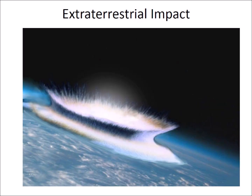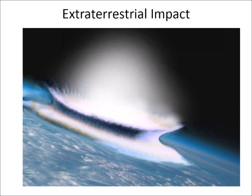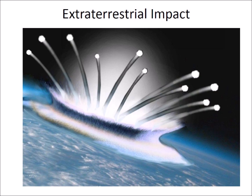The impact on the Laurentide Ice Sheet fractured the ice and the excavation of the crater ejected millions of huge ice boulders. The heat from the impact created a plume of steam that propelled the ejected ice boulders with great speed. The ice boulders in the ejecta curtain were launched in suborbital space flights with a range of 1,500 kilometers from the impact site.